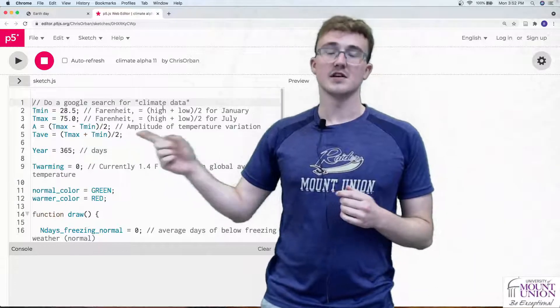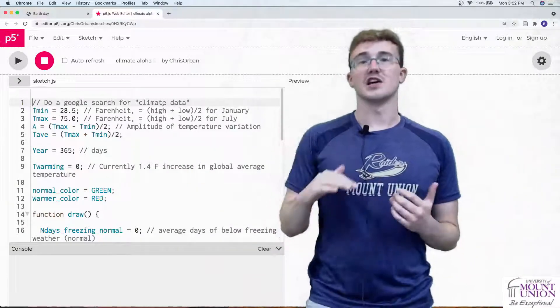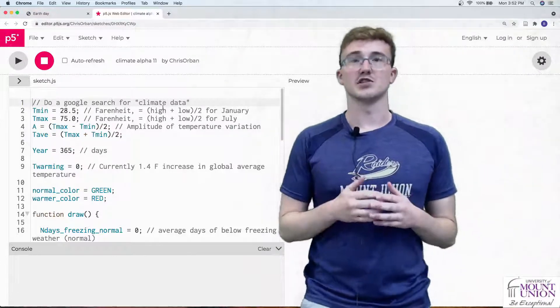T_average here is the average between the July and January temperatures, giving us a good idea of the average temperature year-round.